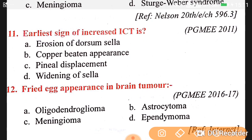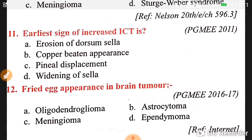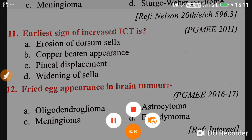Question number twelve: fried egg appearance in a brain tumor is mainly due to oligodendroglioma. That's all for today — if you have any queries you can ask, and please subscribe to the channel if you haven't already.